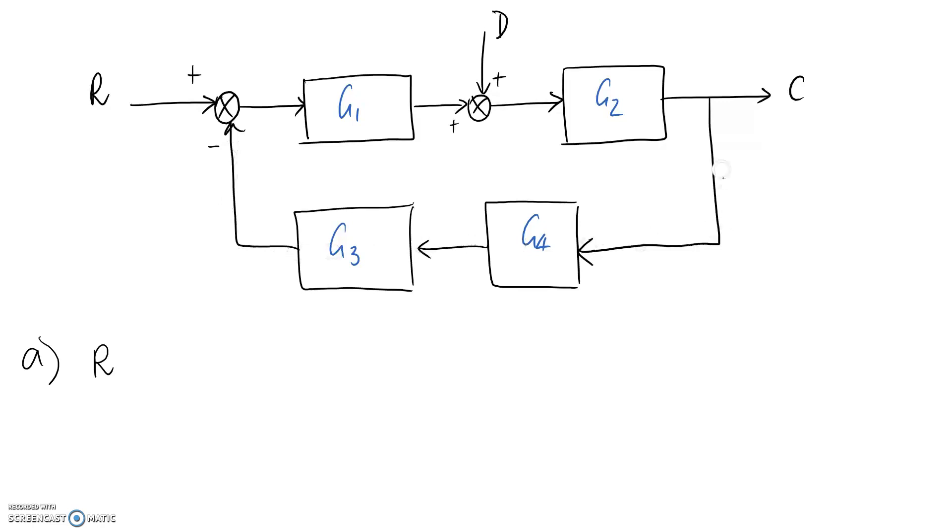We need to track it back all the way to here and relate it to the output of our overall system C and also these two blocks. At this point the signal is C. To be able to jump this block I need to multiply that by G4, so at this point I'm going to get C times G4.